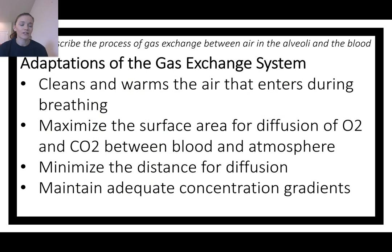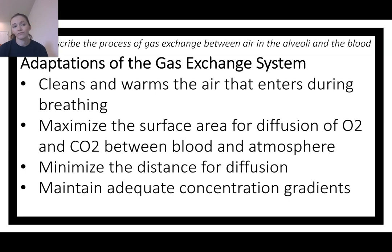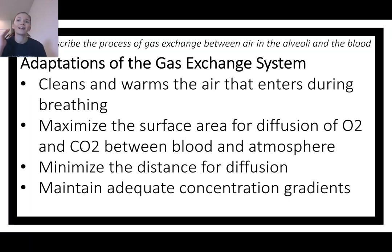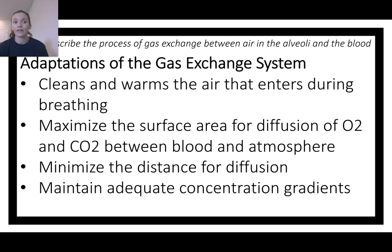Some adaptations of the gas exchange system: mucus and cilia clean the air, stopping things from reaching the lungs. Warming the air increases temperature, which increases diffusion rate. Surface area is maximized while distance is minimized — walls are only half a micrometer, two super-thin membranes, as little distance as possible for efficient diffusion. Concentration gradients keep oxygen flowing in and CO2 flowing out.